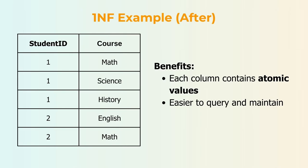After applying 1NF, we split the data into individual rows. Now, each course is listed on its own line, so it's easier to find and work with. For example, student 1 now has three rows, one for each course they are taking — math, science, and history. Each data entry is simple and clear. If we wanted to search for all students taking science, it's much easier now. This is a key benefit of 1NF — better organization and easier data management.